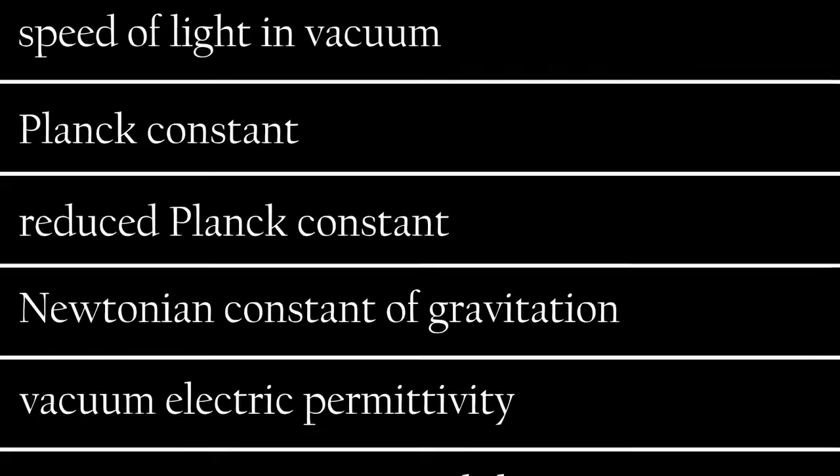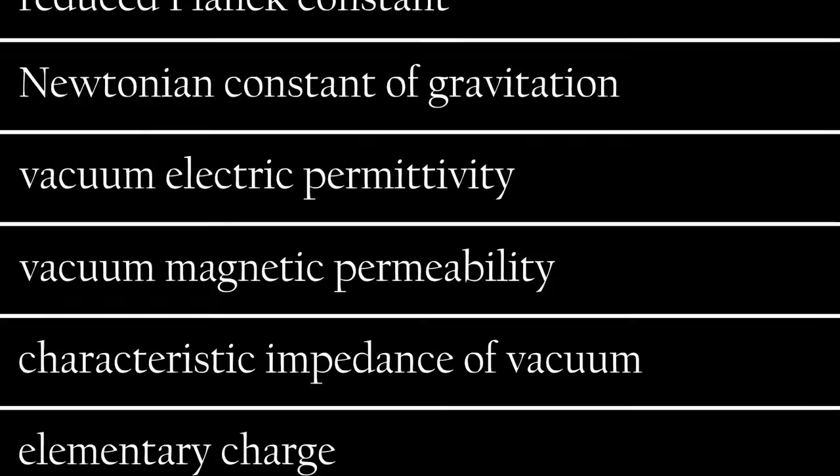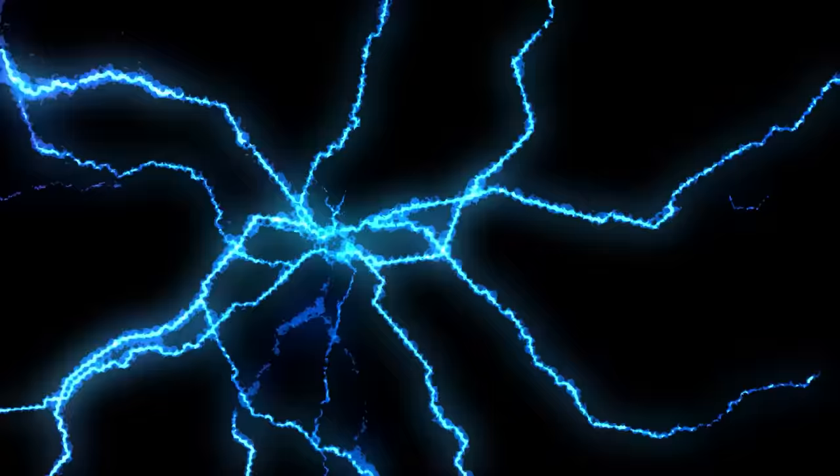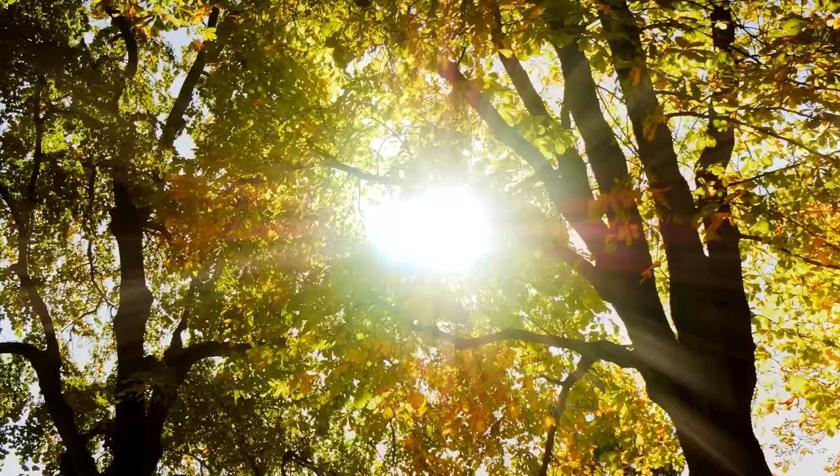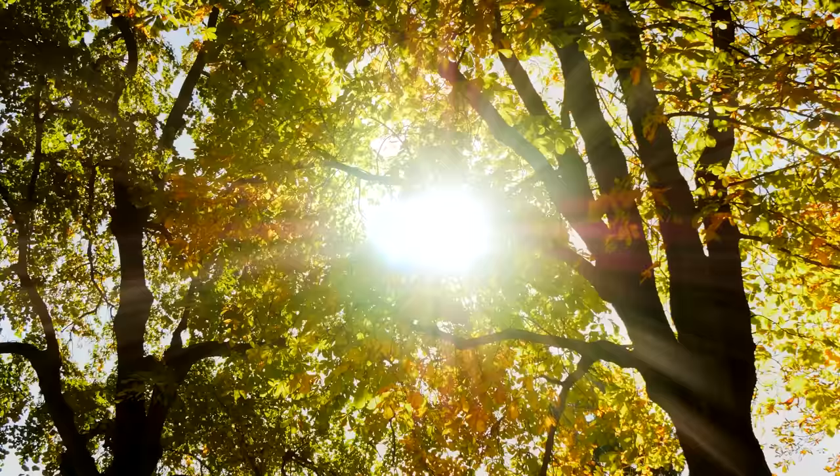As our scientific theories advance and disparate pieces are united as one, the number of these constants needed to describe the universe decreases. Before Maxwell, two separate constants were needed: one to describe the action of electric phenomena, and another to describe magnetism. Within Maxwell's equations, these two numbers were united into a single constant of nature - the speed of light. And so, is this the answer?